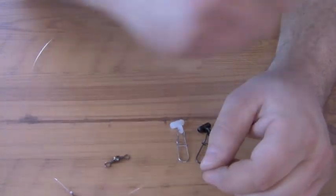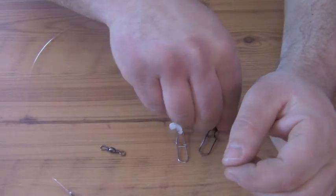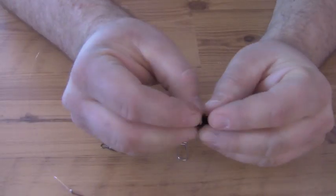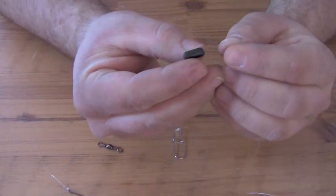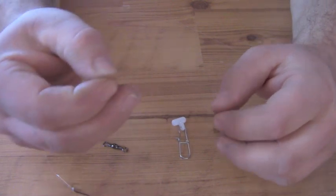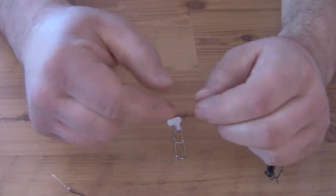First, what you're going to do is take your slider and put it on the line coming off your fishing pole. You always want to do that first before you tie on your swivel.